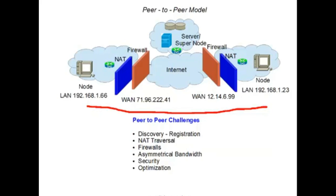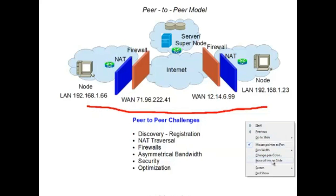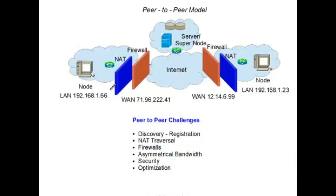In the client-server model, the server is well known because there's a URL associated with it that gets advertised, so if you want to use that service you go to the URL. But in peer-to-peer services, you generally don't have a URL for the host you're trying to contact. This applies to services like file sharing or Voice over IP. The local area network private address is not going to help you because there's no easy way to get to it.